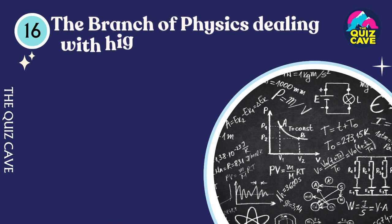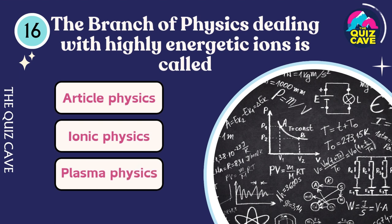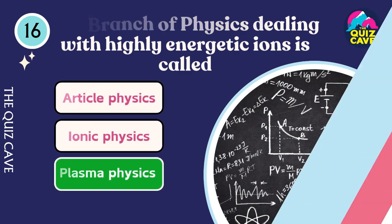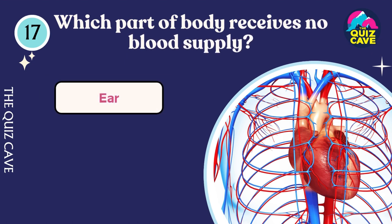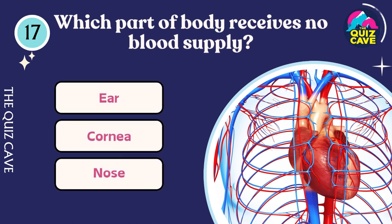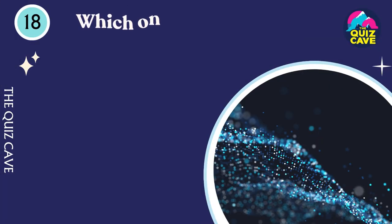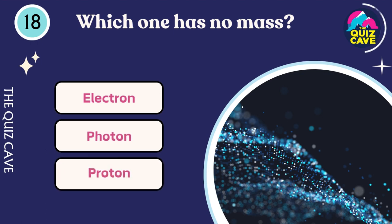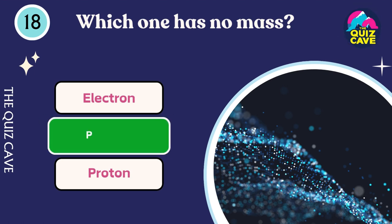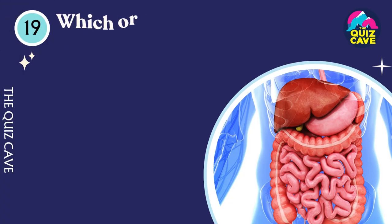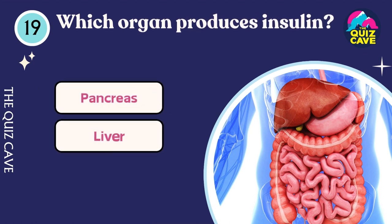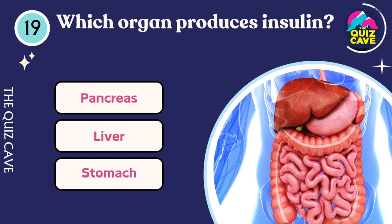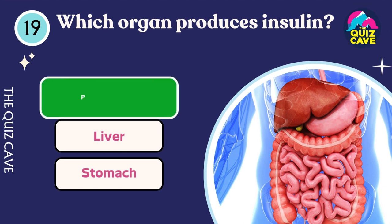The branch of physics dealing with high energy particles is plasma physics. Which part of the body receives no blood supply? Cornea. Which organ produces insulin? Pancreas.